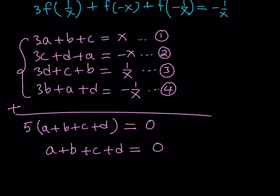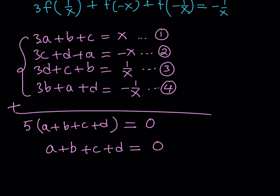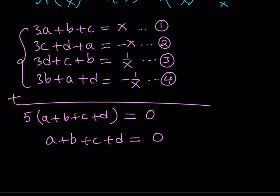Now a refers to f of negative x, b refers to f of 1 over x, and so on. This gives us additional information about the function, but I'm going to proceed with solving the system. So we have a + b + c + d = 0 — keep that for future reference.